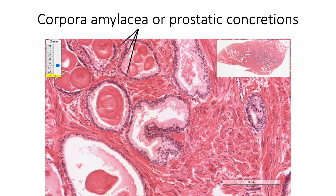Alveoli in older men contain concentric laminated bodies called corpora amylacea or prostatic concretions. These are actually deposits of prostatic secretions around cell fragments.